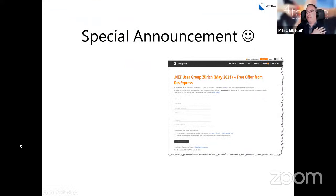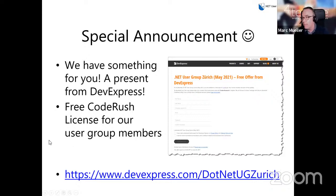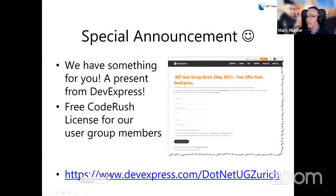Today we have a special announcement from our friends at DevExpress. You may know their DevExpress UI controls for WinUI, but they also have developer productivity tools for refactoring, code navigation, and code analysis. All our members from the user group will get a one-year free license for CodeRush, their developer productivity tool — an add-on to Visual Studio. Click the link, register, and you get a free license for one year from DevExpress.